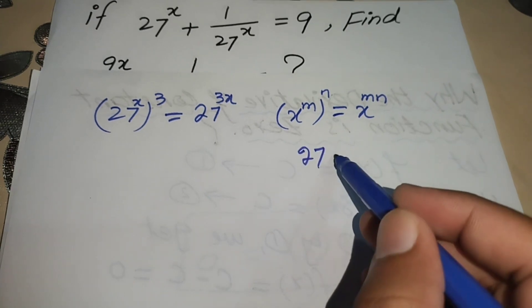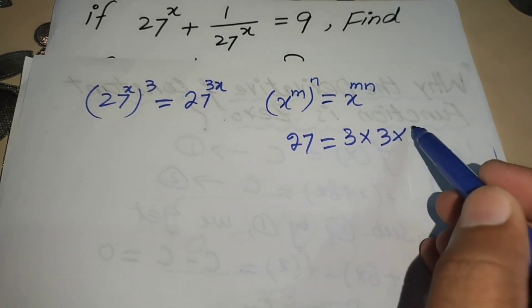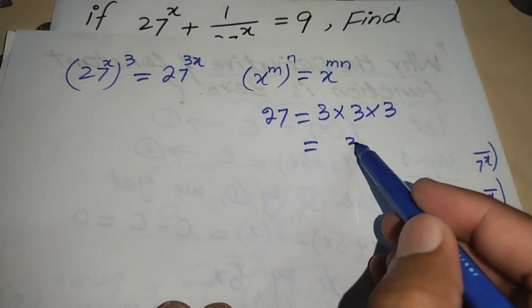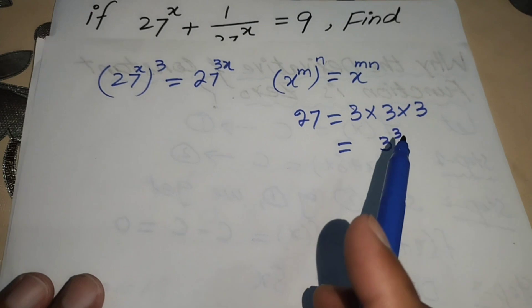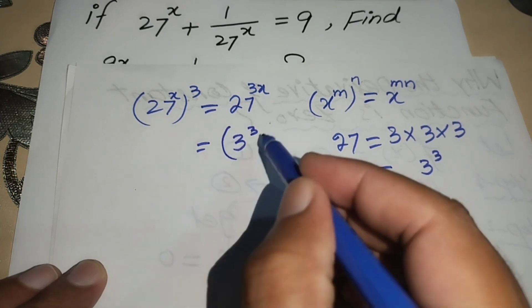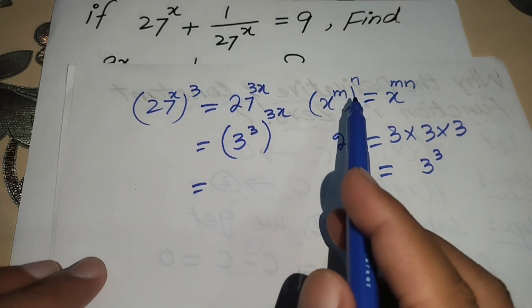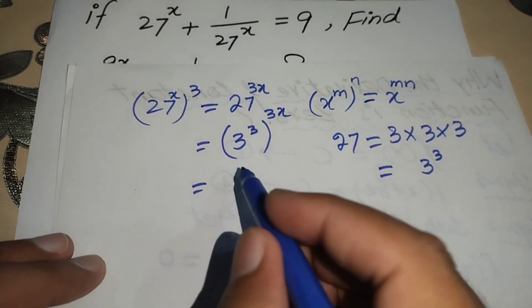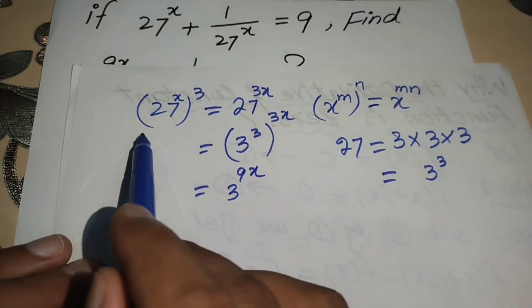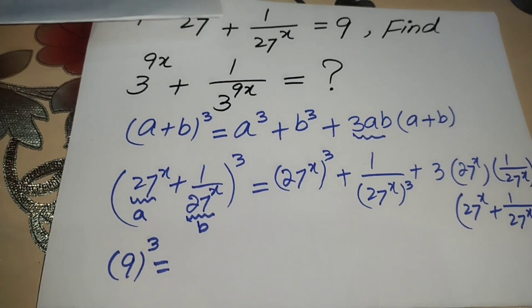Next we find the prime factors of 27. We know that 27 = 3³, so substituting this, 27^(3x) becomes (3³)^(3x). Applying the exponent law again, we get 3^(9x).